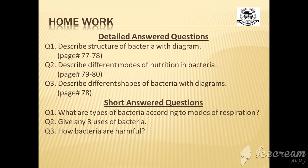You have done heterotrophic bacteria — three kinds of heterotrophic — and then one kind of autotrophic. Autotrophic has two kinds: chemosynthetic and photosynthetic. Describe this in detail; you can take help from pages 79-80.